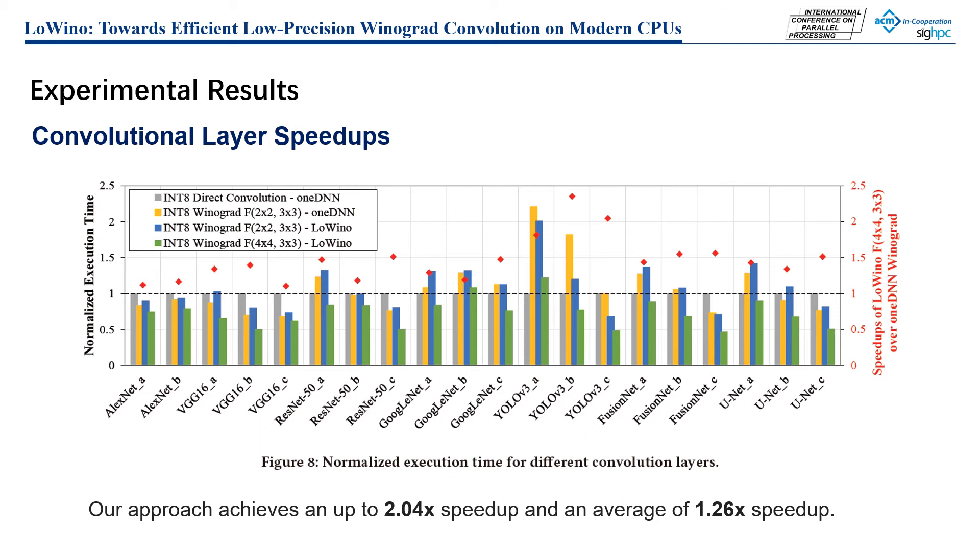When the tile size M equals 2, LoWino achieves competitive performance compared with the ONEDNN library. When M equals 4, LoWino achieves up to 2.04 times speedup and an average of 1.26 times speedup, which delivers a significant performance improvement.